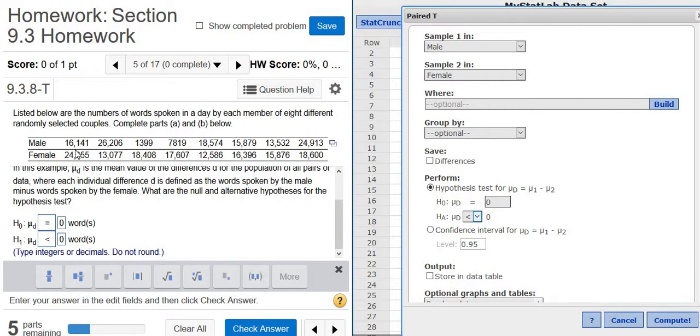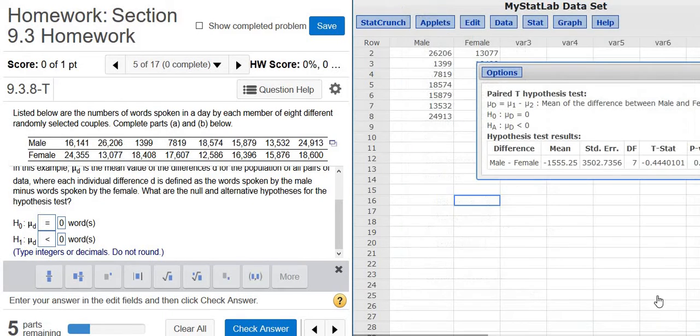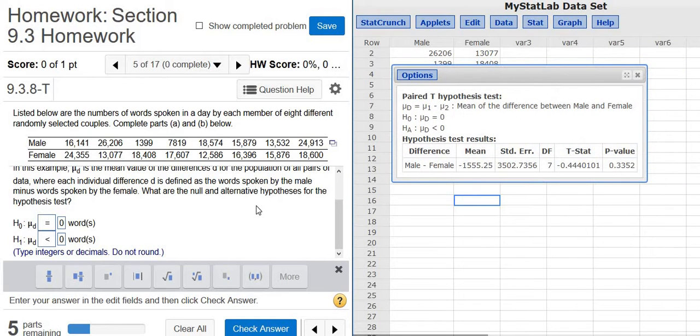And again, the reason it's less than zero is because you want the males to speak fewer words than females. So this number, when you subtract, you should get a negative number, because you want the first number to be smaller. Click Compute. And there's probably what it wants, most of the answers. So let me go ahead and click Check Answer here to get this part right.